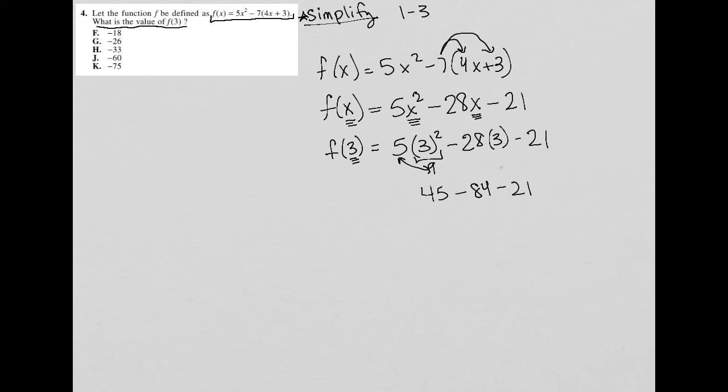Now I'm going to just throw all of this into my calculator. So 45 - 84 - 21 = -60. So f(3) = -60.